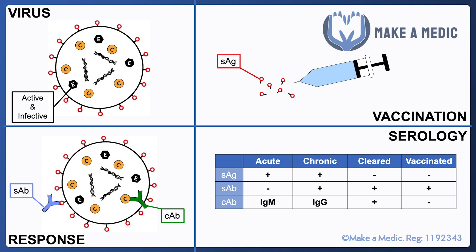If someone is acutely infected, they will still have detectable surface antigen because the virus is still around. They may or may not have the e-antigen depending on the type of virus, and they won't have developed surface antibodies yet because not enough time has passed, though they may have developed some IgM core antibodies. In chronic infection, surface antigen is still present due to active virus, surface antibody also appears as the body has had enough time to mount an immune response, and the core antibodies will have switched to IgG since it's no longer in the acute phase.